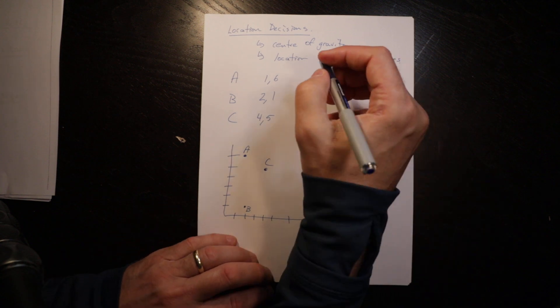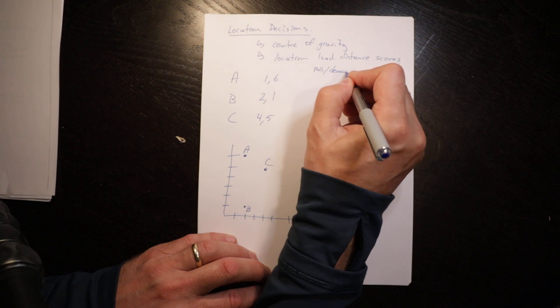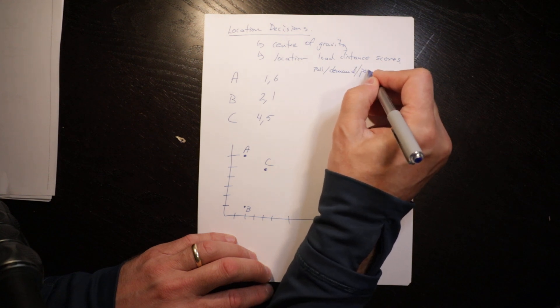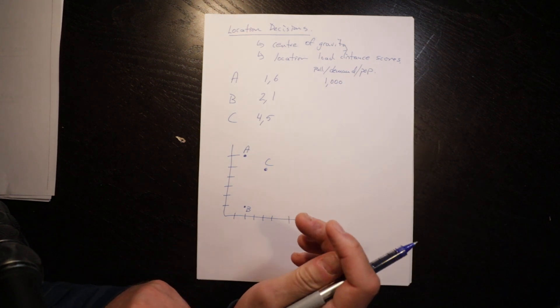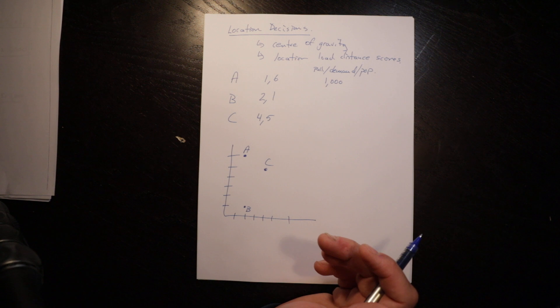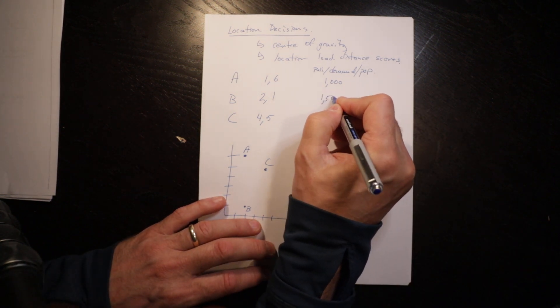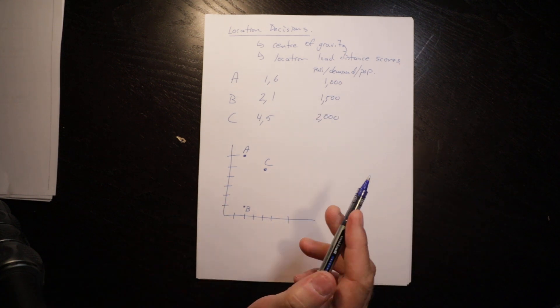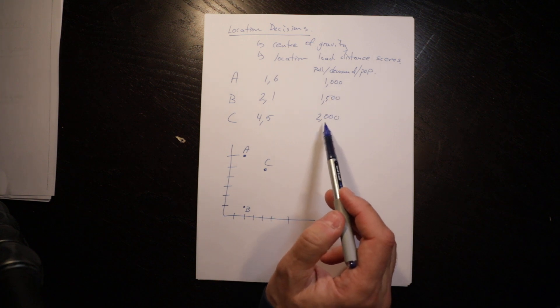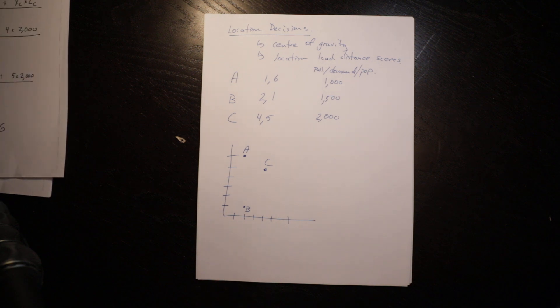Then you have what's called the pull or the demand or population of each one, which is how many trips or how big a demand will be from that location to the facility you're looking to locate. So it provides some weight for making that choice. A has lower demand, C has the highest demand, so that will pull the location towards C.